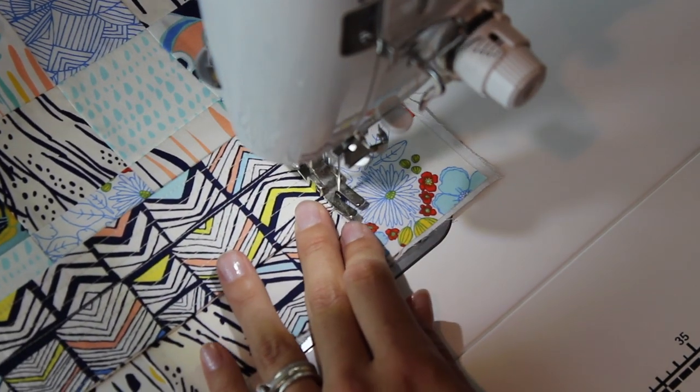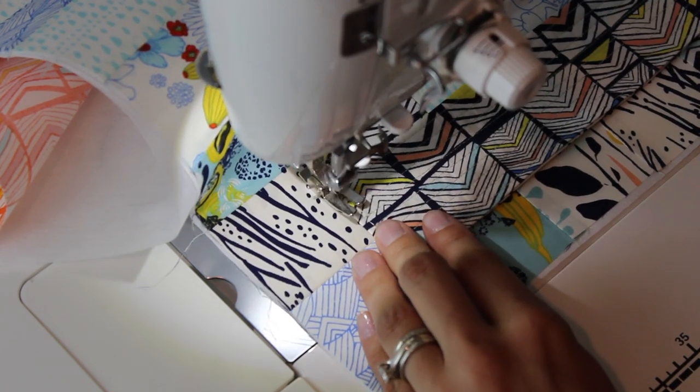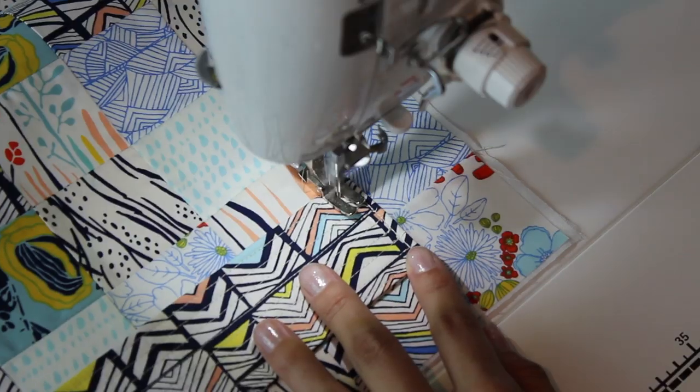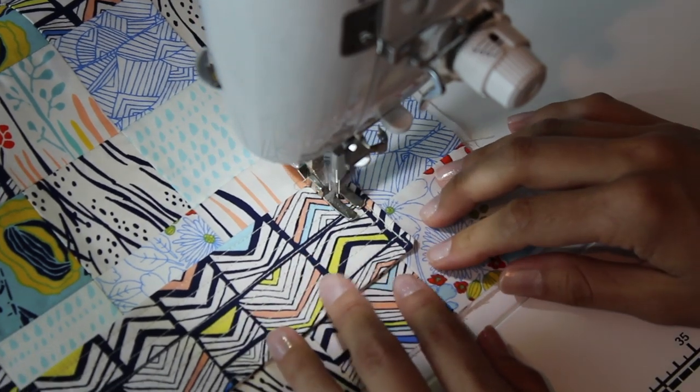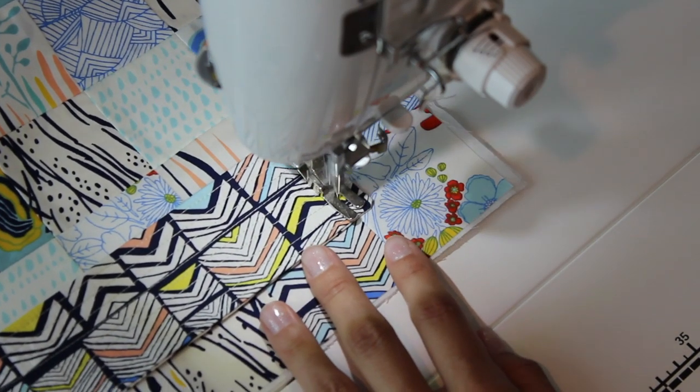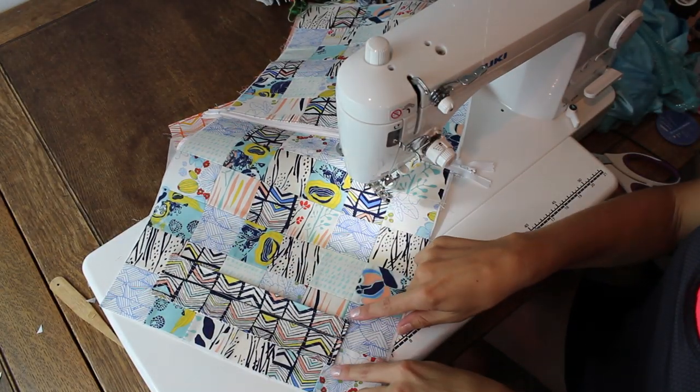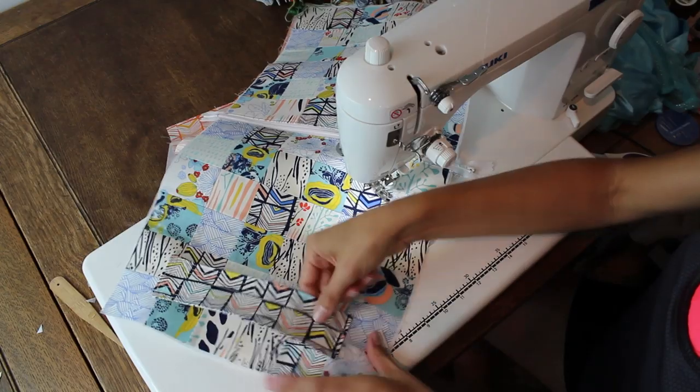Make sure to backstitch both sides. This needs to be very secure. And don't forget, do not include the lining when you are sewing this step. I decided to add another little line of stitching over here just for that added security. Make sure that those stitches are nice and secure.